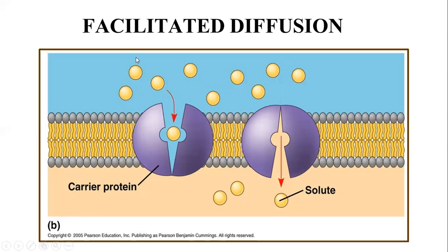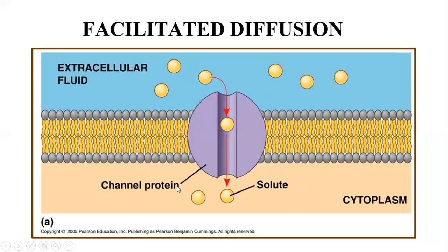Another carrier protein diagram shows molecules outside the cell attaching to a facilitated carrier protein and being carried inside the cell. This is another diagram of a carrier protein which gives direct passage to substances into the cells.